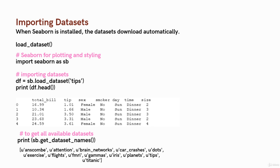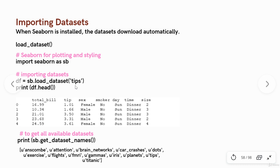Importing datasets is very easy with the help of the Seaborn library. There are a lot of datasets which are by default available in Seaborn for your practice and for understanding the working of various Seaborn functions. To do that, you need to use the load_dataset() function and import Seaborn as sb. sb is the context for loading the Seaborn datasets that are available by default. To import the 'tips' dataset, which is one of the default datasets, use: df = sb.load_dataset('tips').